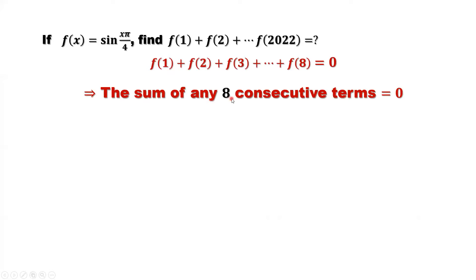The sum of any eight consecutive terms equal to 0. This one we start from 1, we can start from 2, then the ending is f of 9. Or we can start from 3, ending is 10. Whatever you are counting from beginning to the end, from end to the beginning, or from middle to the right, from the middle to the left, any term, the sum of any consecutive terms equal to 0. This is our conclusion.